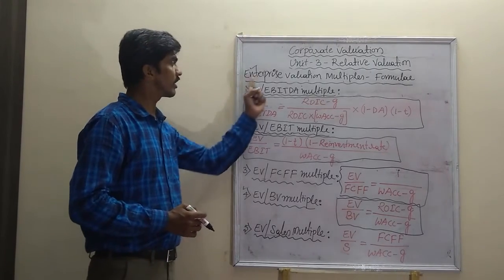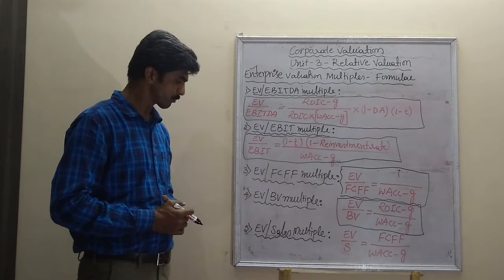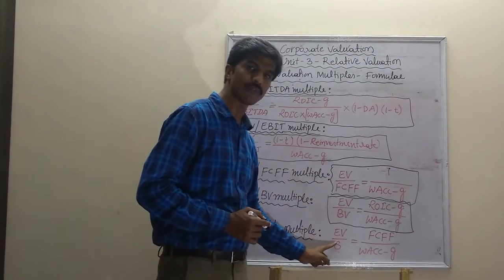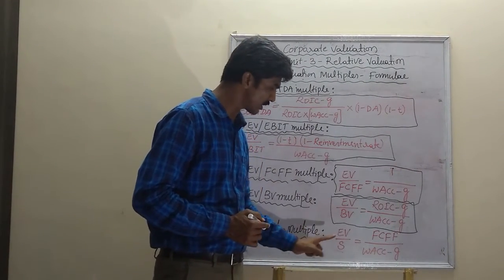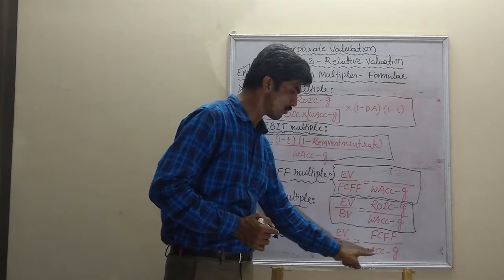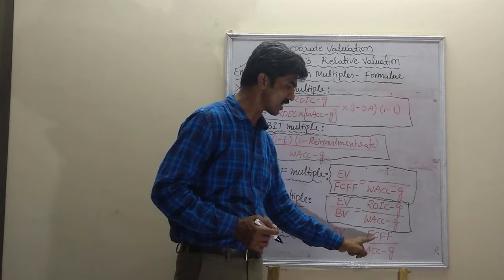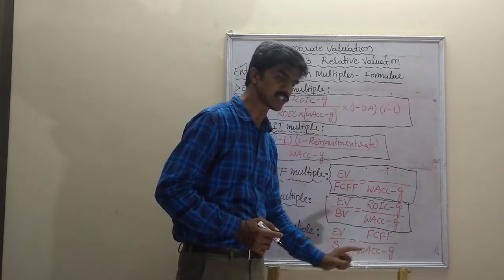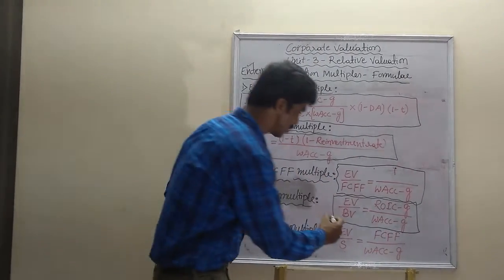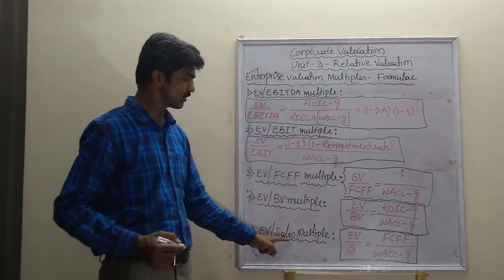The last multiple under enterprise valuation multiples is EV to Sales multiple, wherein EV stands for enterprise value. The formula used in calculating EV to Sales multiple is: enterprise value to sales is equal to FCFF divided by (WACC minus G). Wherein FCFF stands for free cash flows to the firm, WACC stands for weighted average cost of capital, and G stands for growth rate in dividends.